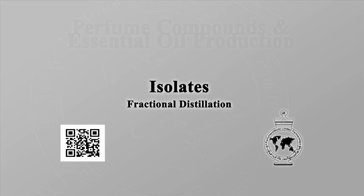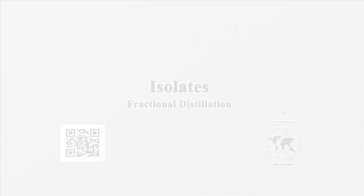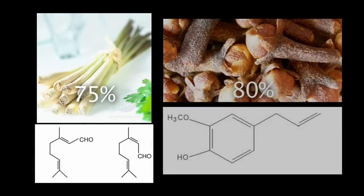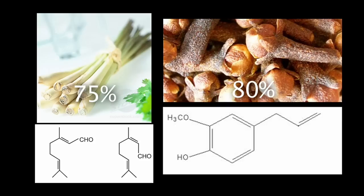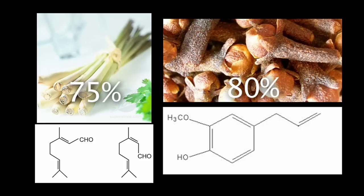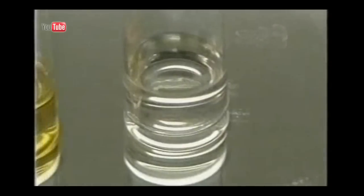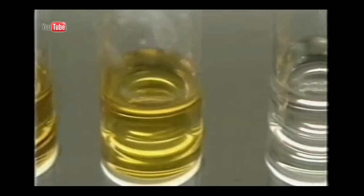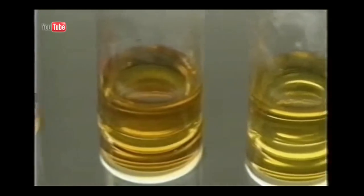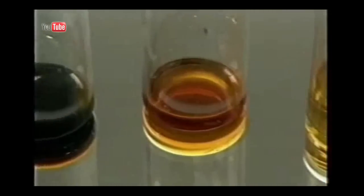Fractional distillation is used to separate citral from lemongrass oil, and eugenol from clove oil, according to each component's evaporation characteristics. Essential oils are complex natural mixtures, and each component is an aroma chemical with its own unique evaporation characteristic. In perfumery, fractional distillation is used for refining essential oils or separating individual constituents.